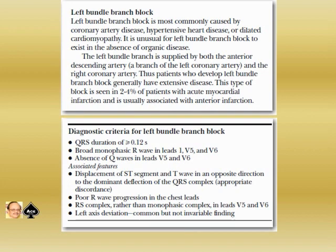Left bundle branch block is most commonly caused by coronary disease, hypertensive disease, or dilated cardiomyopathy. It is unusual for left bundle branch block to exist in the absence of organic disease. The left bundle branch is supplied by both the anterior descending artery, which is a branch of the left coronary artery, and the right coronary artery. Thus, patients who develop left bundle branch block generally have extensive disease.